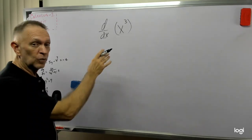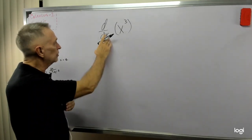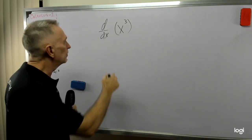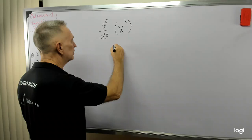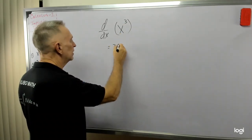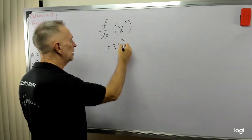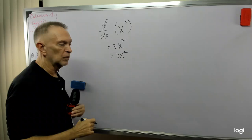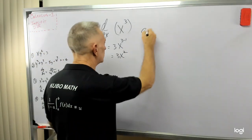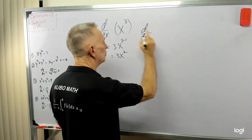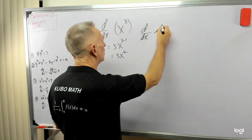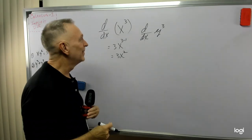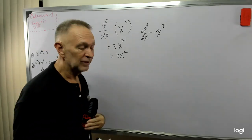Okay, you know when we did derivatives, if we said let's take the derivative of x cubed, no problem. We would bring the 3 down, times x to the 3 minus 1, and that would give us 3x squared. No problem. But what if we said, let's take the derivative with respect to x of y cubed? What do we do?